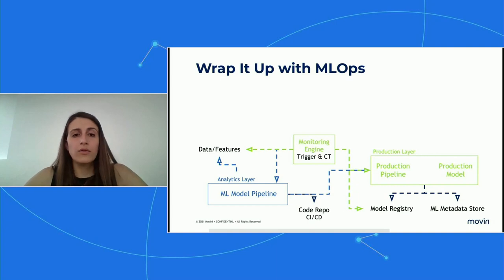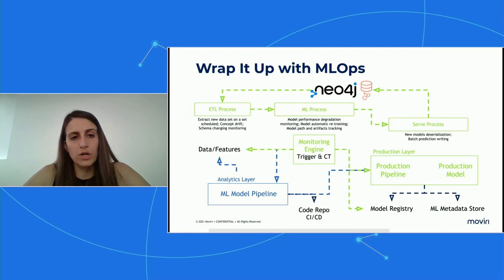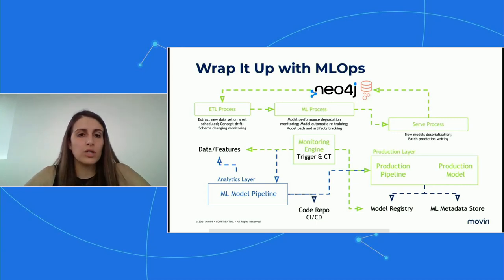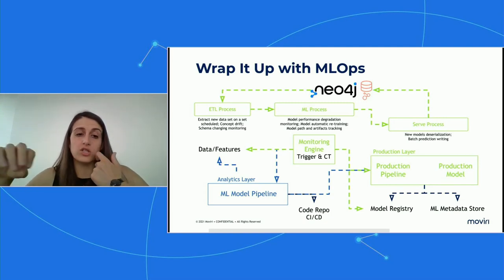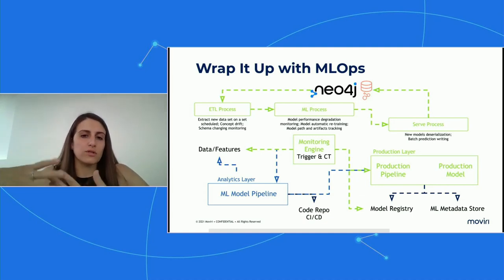There are many tools that allow you to perform these operations, but at Moviri, we have created our own MLOps framework. This framework is based on three different processes. The first is the ETL process, directly connected to Neo4j — it gets data and performs checks on concept drift and schema changes. Data are then transferred to the ML process, which runs the model and tests its performance. If everything is fine, the CERF process writes the updated analysis outcome back into Neo4j, and takes care of feeding the model registry and the ML metadata store.